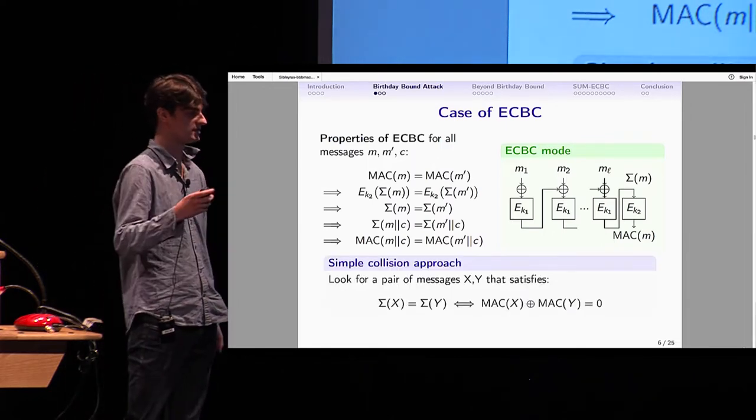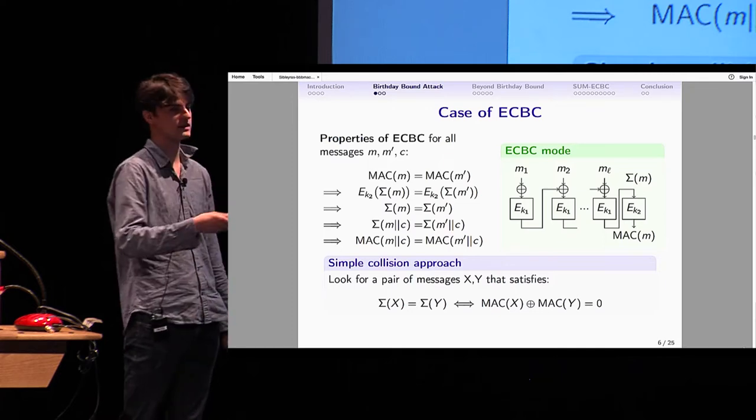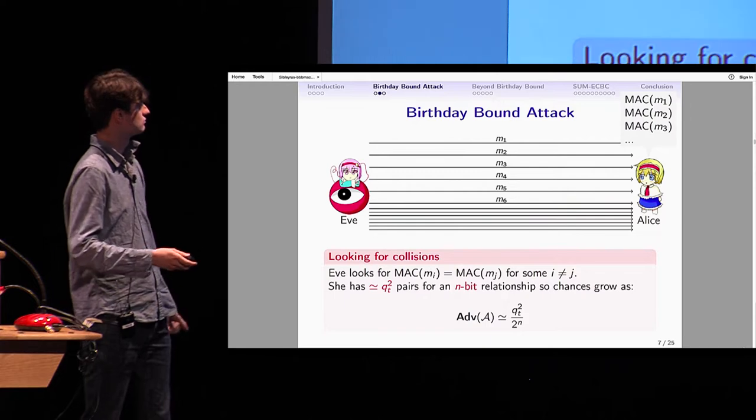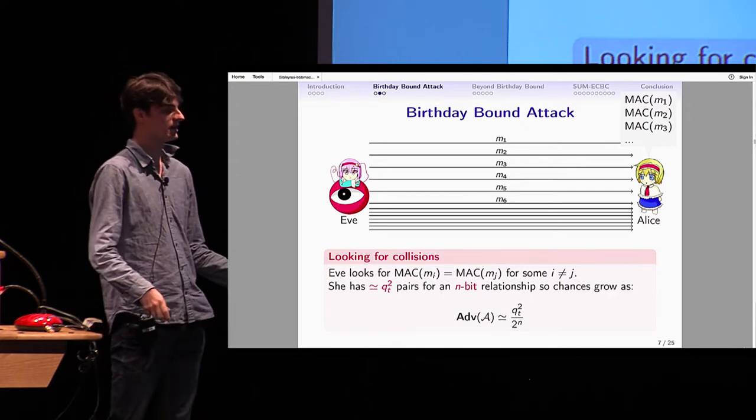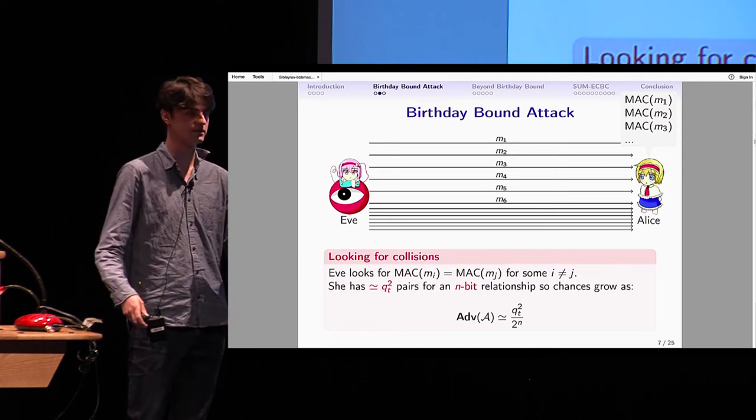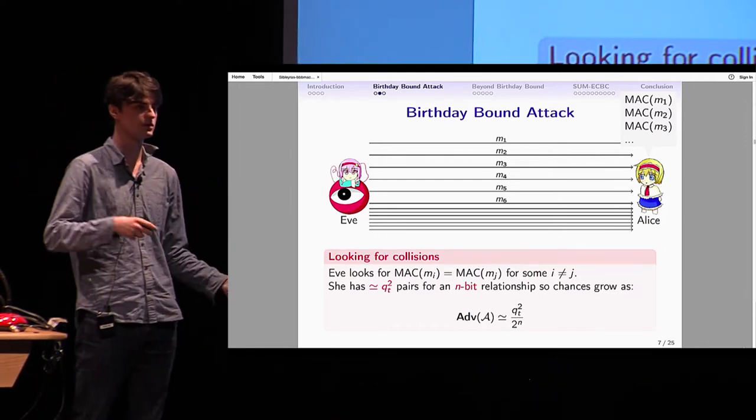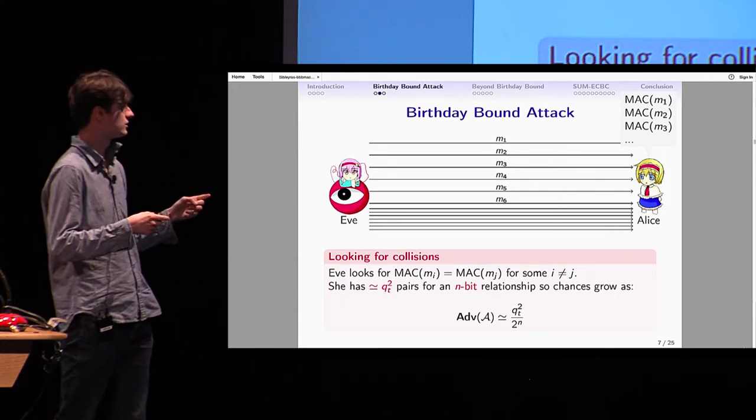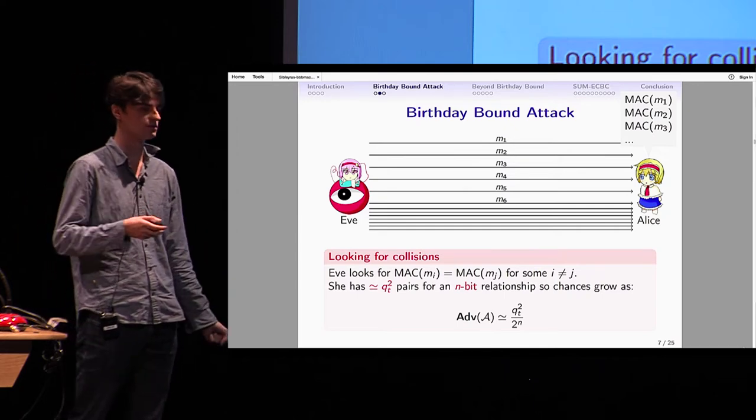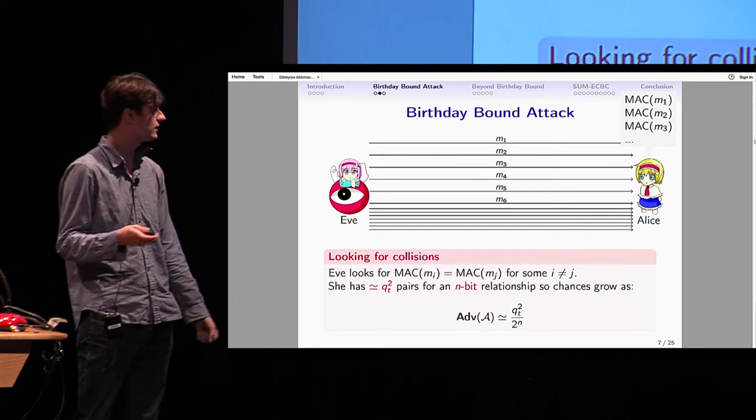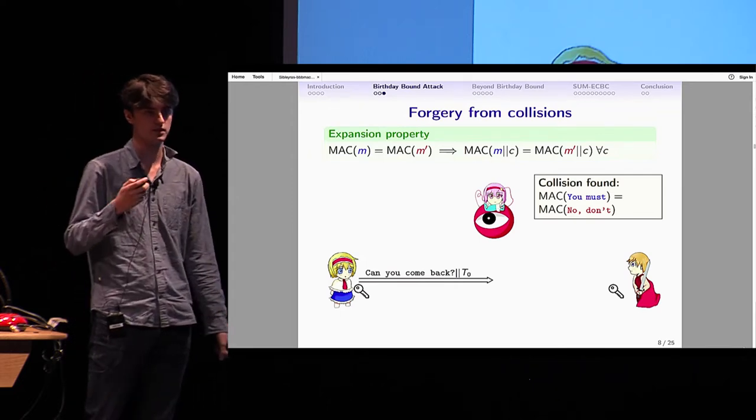The cryptanalysis of ECBC-MAC works like this. You look for a pair of messages X and Y such that they collide in the whole internal state, and you see it because the MACs are also equal. You send loads of messages to Alice, get loads of MACs for those messages, and look for a collision. If I give Qt queries, the number of pairs grows like Qt squared. Because you look for a relation on n bits, the advantage to find a good pair grows like Qt squared over 2^n.